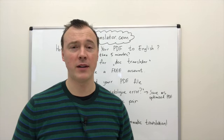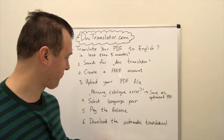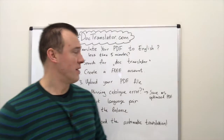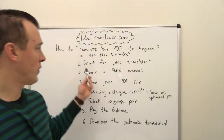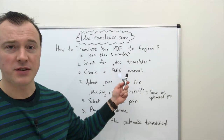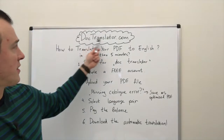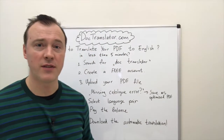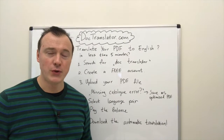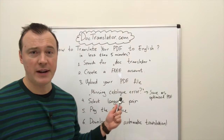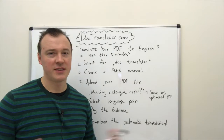Step number one: you need to register. Go to Google and search for doc translator. Once you find doc translator dot-com, please click on that search result. Step number two: you need to create a free account. Yes, the account creation is free — there's absolutely nothing you need to pay.